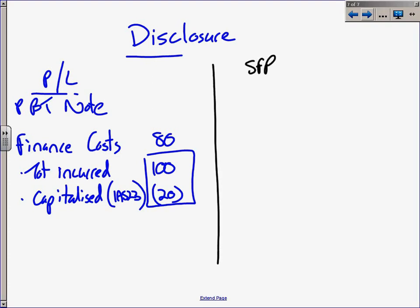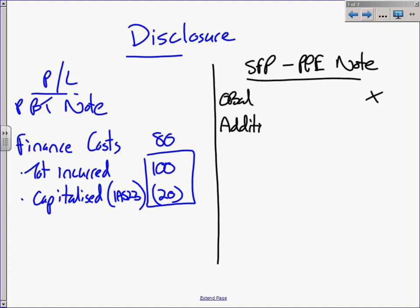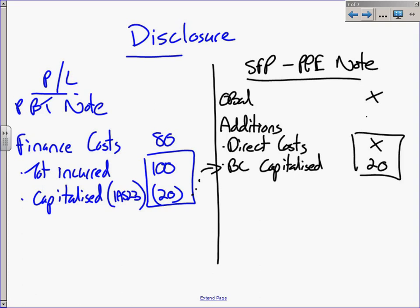In the statement of financial position, let's have a look at the PPE note, or you could have inventory notes. PPE is the most common. So you will have your opening balance carrying amount of whatever it may be, then you will have additions, and you will have that made up of direct costs as well as borrowing costs capitalized. Your direct costs and your borrowing costs capitalized, we see it as 20, you add them up, and you get the figure on top.